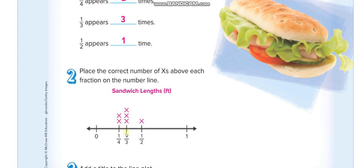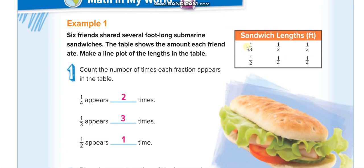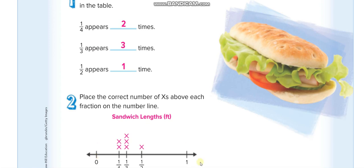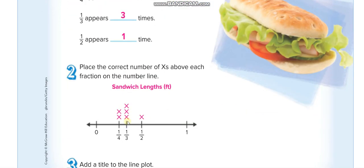After the half, put one-third. Now place the crosses: how many halves — one cross; how many one-thirds — three crosses; how many quarters — two crosses. If you had a mixed number like two and one-third, you'd start the line at two and end at three. But here all fractions are between zero and one, so we start at zero, end at one, put one-half in the middle, one-quarter between zero and one-half, and one-third between one-half and one.